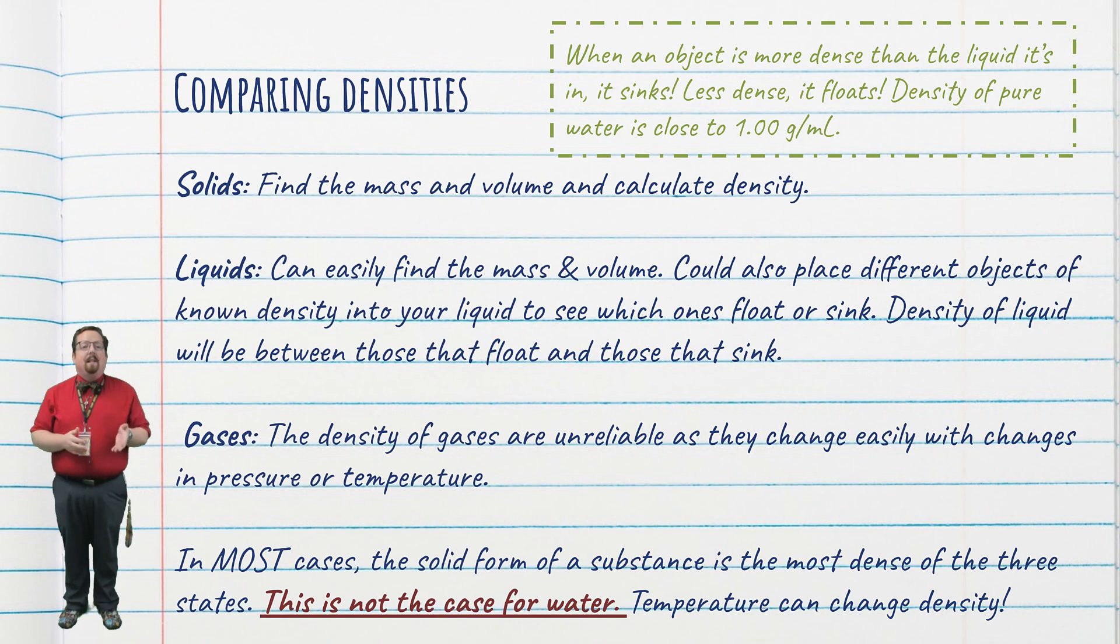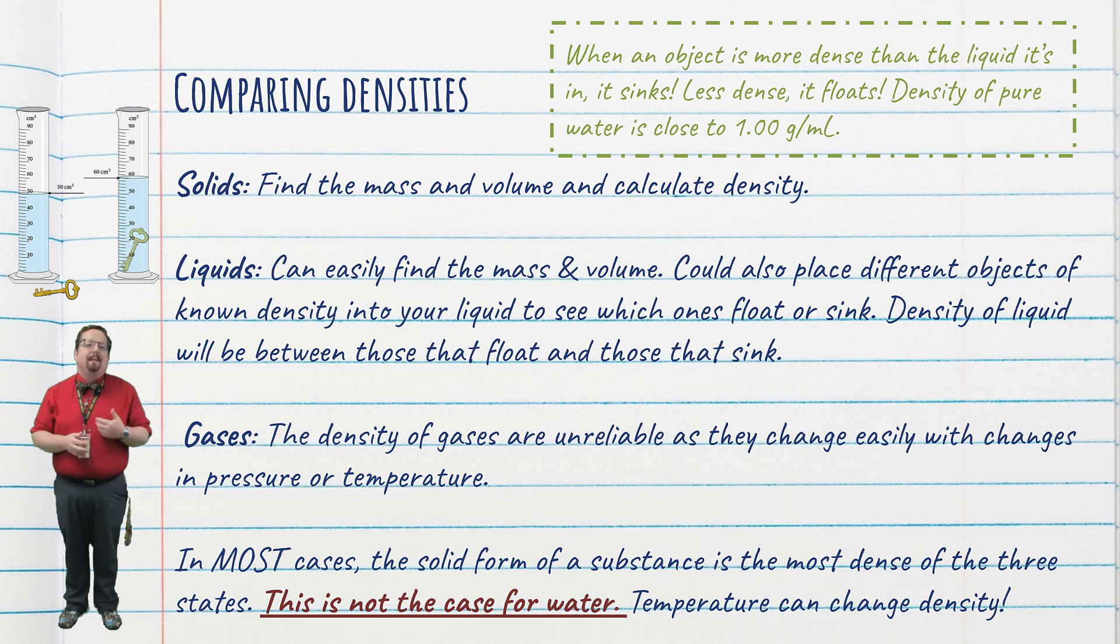To find the density of a solid, you just have to measure the mass and volume. For a regularly shaped solid, you could use a ruler and geometry to find the volume. For irregularly shaped solids, you place them in a graduated cylinder of water to see how much the volume level of the water changes. That volume change is equal to the volume of the solid.